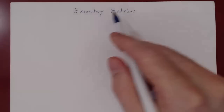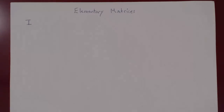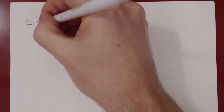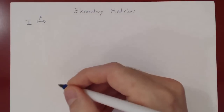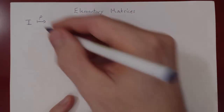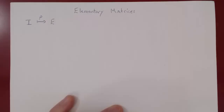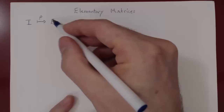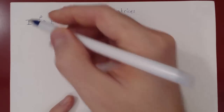This new concept is called elementary matrices. The word elementary means that they're rather simple matrices. Here's how you build them: start with I, the identity matrix, and apply to I a single row operation — rho, the Greek letter R. If you apply to I a single row operation, you get a new matrix, and E is called an elementary matrix. So an elementary matrix is a matrix that can be obtained from I by applying a single row operation.